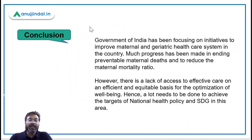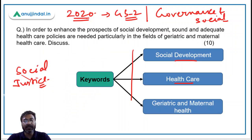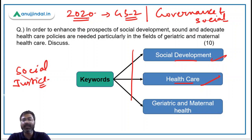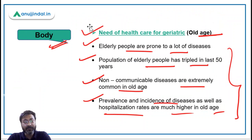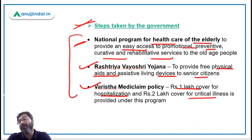Now let's move to the conclusion. We have covered the body: the need for sound and adequate healthcare policies in the geriatric and maternal healthcare sectors. We told the examiner the need for intervention in maternal healthcare and also what steps the government has taken. In the conclusion, you have to summarize these two things.